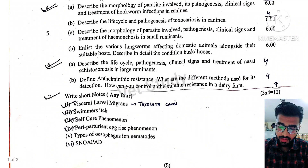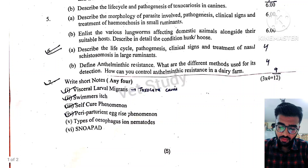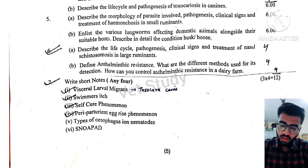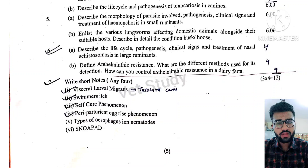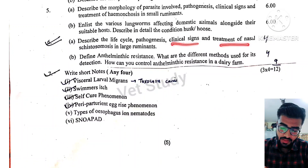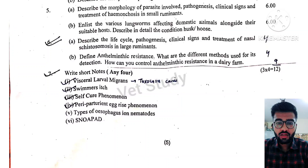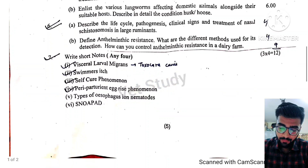Next, enlist the various lungworms affecting domestic animals alongside their suitable host and the condition — husk and hoose. We have to describe dictyocaulus, viviparus, and different suitable hosts. Then the life cycle, pathogenesis, clinical signs, treatment of nasal schistosomiasis — nasal schistosomiasis is very important, and its pathogenesis is asked many times.